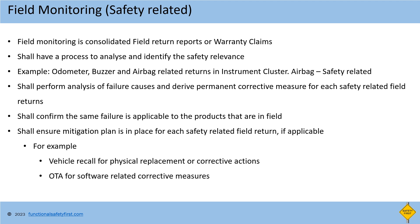After reporting, a detailed analysis of failure causes shall be performed and permanent corrective actions shall be taken for the product. Then analyze whether the same failure cause can be applicable to more than one product which is in the field. For example, in the airbag indication failure, the LED component is the cause, and how many clusters were produced with the same LED component bins is to be identified to confirm whether the same failure is applicable to products currently in the field. A mitigation plan shall be in place to correct the failed parts still in the field with the same issue. The mitigation plan can be a vehicle recall for physical replacement with corrected hardware LED. In some cases, OTA (over-the-air) based updates for software related corrective measures can also be one option for corrective measures in the field.